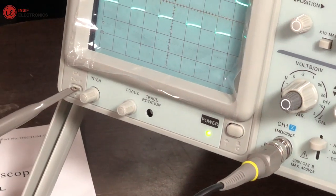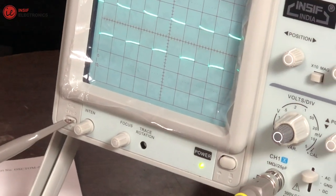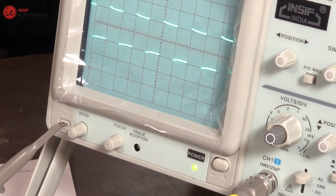Intensity knob is to adjust the intensity of signal, and focus knob is to adjust the focus.